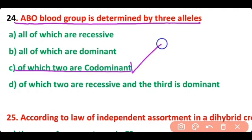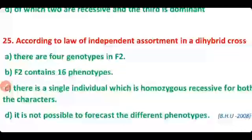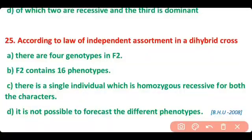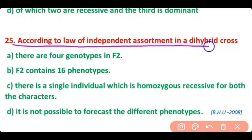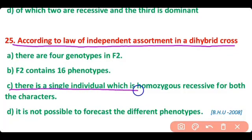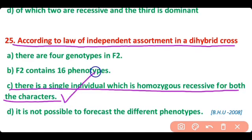Question number 24. The ABO blood group is determined by three alleles, of which two are co-dominant. So correct answer is option C. Question number 25. According to the law of independent assortment, in a dihybrid cross there is a single individual which is homozygous recessive for both characters. So correct answer is option C.